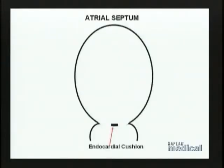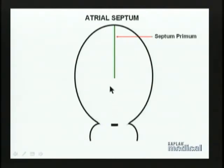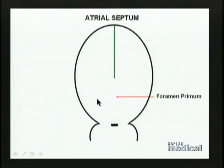Let's start with septum primum, the first septum. Septum primum is going to grow down from the upper wall of the atrial septum and grow down into the atrium, getting longer and longer as it goes. At this point we have a septum primum that is partially separating the two atria, but certainly not completely. And we have this region of communication, which is called the foramen primum — first hole, first opening.